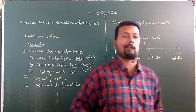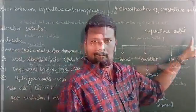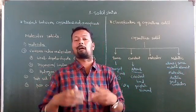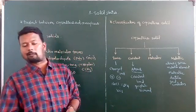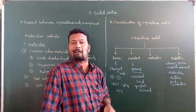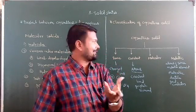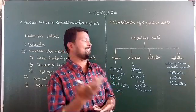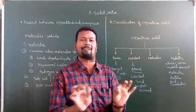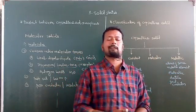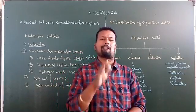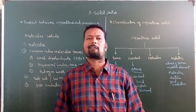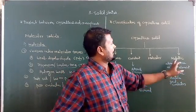Metallic crystalline solids are made up of atoms of the same metallic element. Examples include sodium, potassium, lithium, iron, gold, and aluminum. These solids are malleable — they can be beaten into thin sheets — and ductile — they can be drawn into thin wires. Metallic crystalline solids are good conductors of heat and electricity.